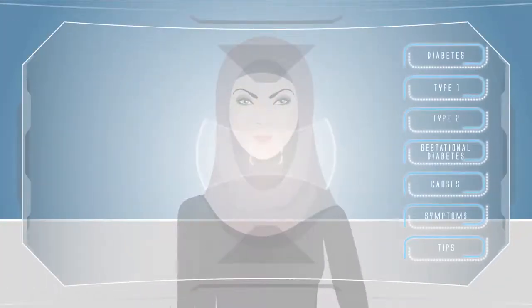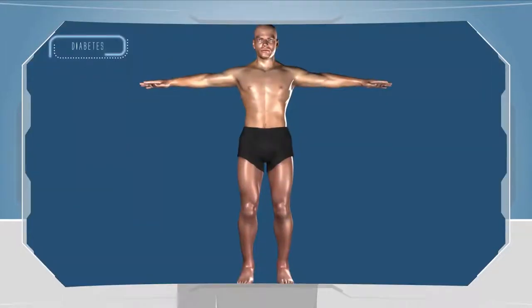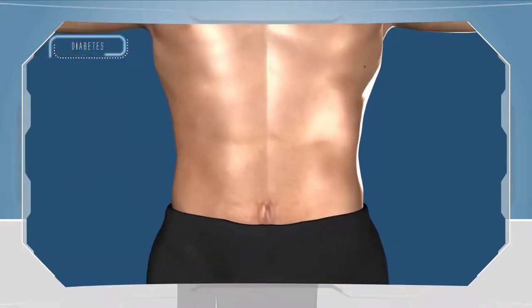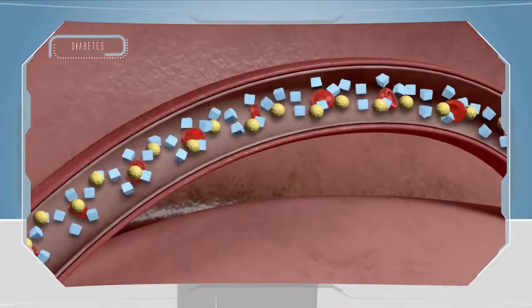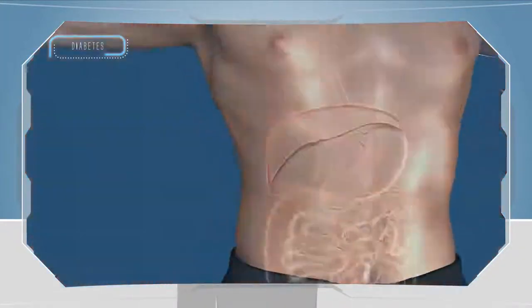Diabetes is a chronic condition in which blood glucose, also called blood sugar, is higher than usual. Blood glucose is the main source of energy for the body and comes from the food that we eat.